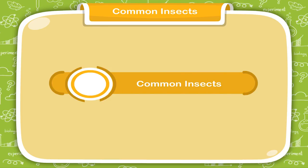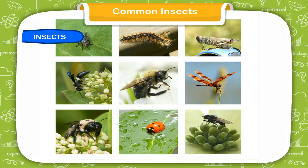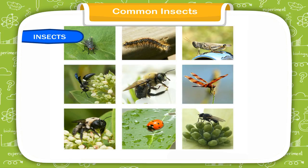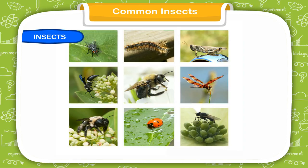Common Insects. Insects are very small creatures found around us. Some insects can fly with their wings, but some insects do not have wings, so they hop or walk on the ground.